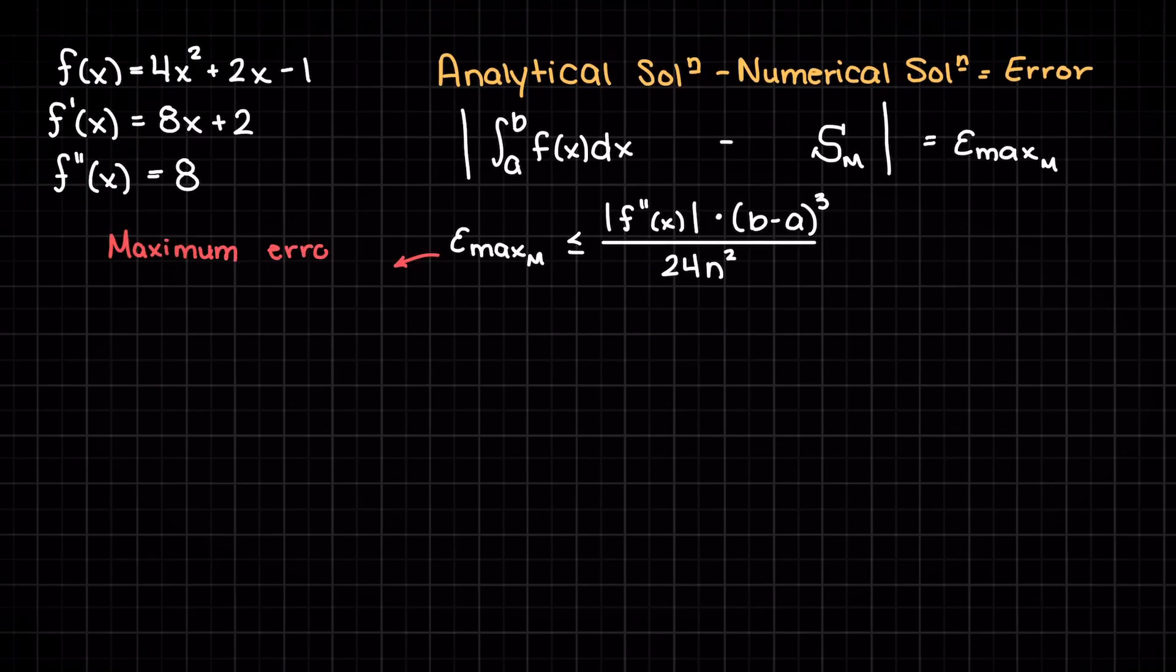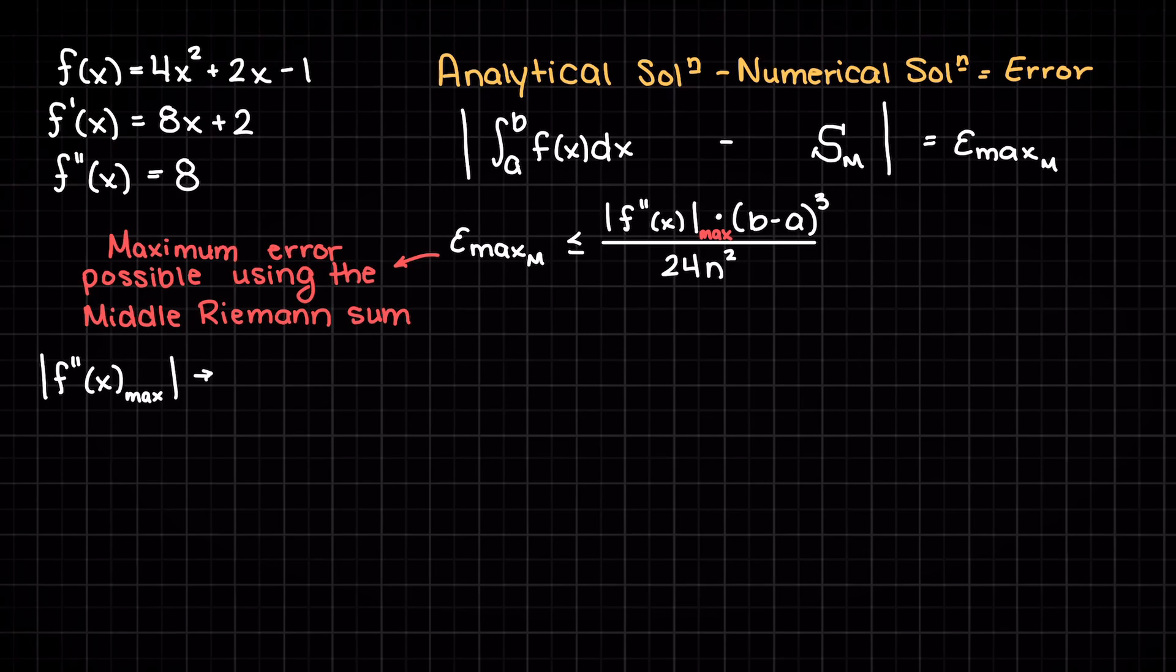Next to find the maximum error of our Riemann sum, we learned in a previous video that if we have equal step sizes, our maximum error of the middle Riemann sum is going to be our absolute maximum of the second derivative of our function times our integrating distance b minus a cubed over 24 times our number of subintervals squared.